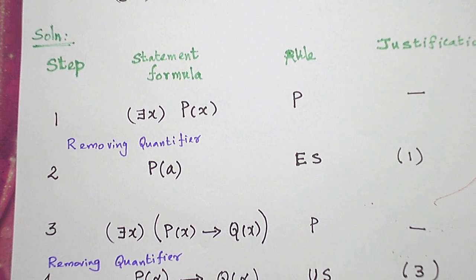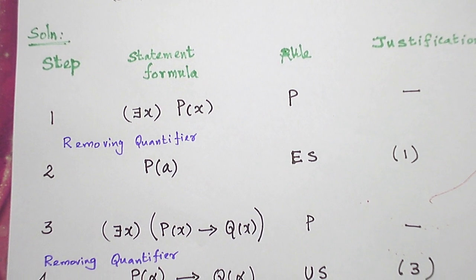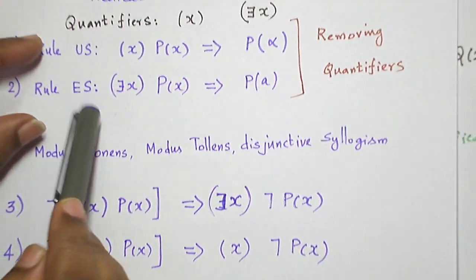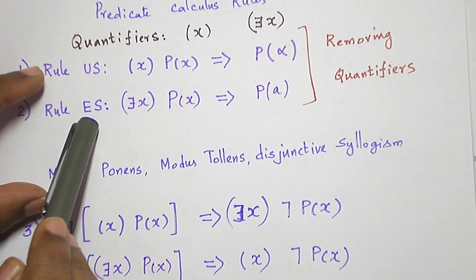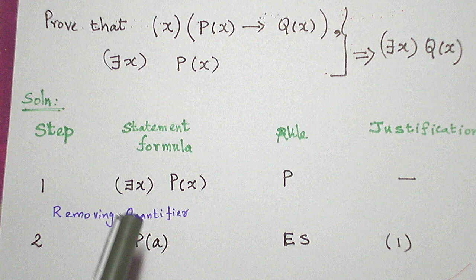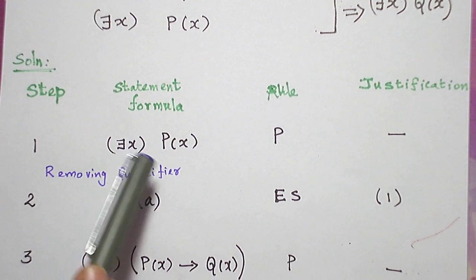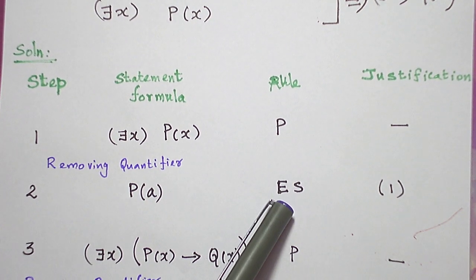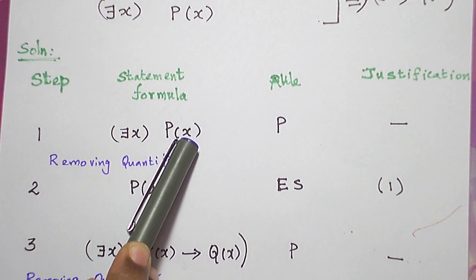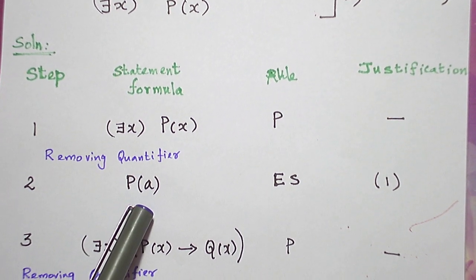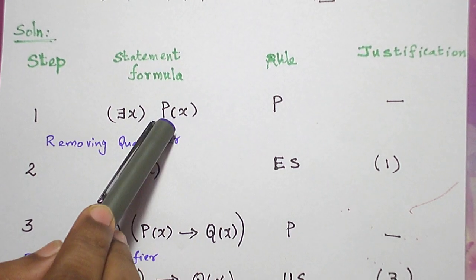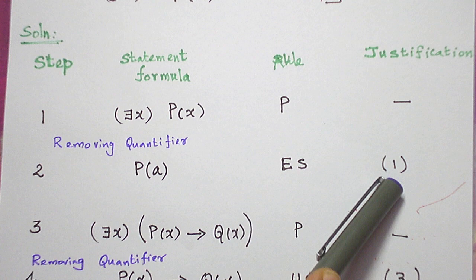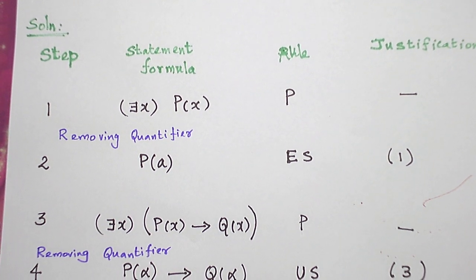Now, to remove the quantifier, we have two rules: Rule US and Rule ES. For the universal quantifier we use Rule US; for the existential quantifier we use Rule ES. Since we have an existential quantifier here, I am going to use Rule ES. When applying Rule ES, I replace x with the English alphabet 'a', giving P(a). This step is done by applying Rule ES to the statement formula in step 1.